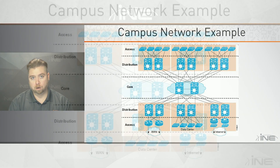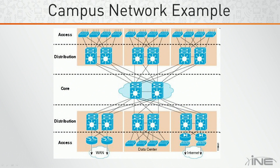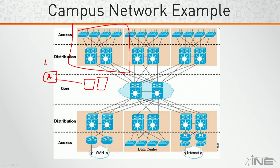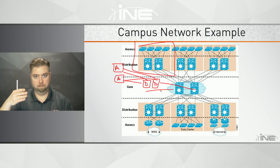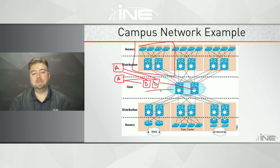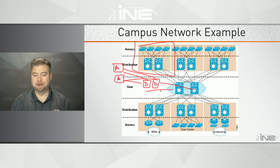As we start to scale the network out, we take this two-tier design — distribution and access — and replicate the block. A pair of distribution switches connects to a pair of access switches; we're multi-homed to both distribution switches, and distribution plugs into the core. We continue to scale out rather than scale up. We'll hear this term again when we look at the Clos Fabric and the design of FabricPath and VXLAN versus traditional classical Ethernet.